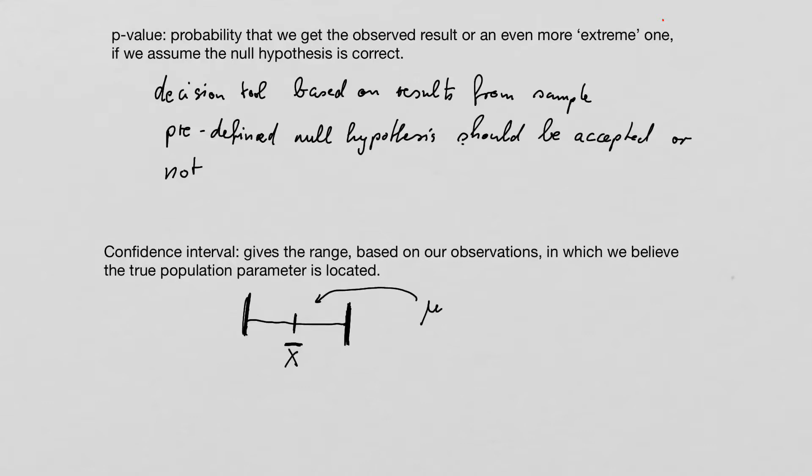This is not something that the p-value does. The p-value gives a numerical decision, basically a binary decision, yes or no. Should we accept the null hypothesis or not, based on the observations that we make. This is the p-value.